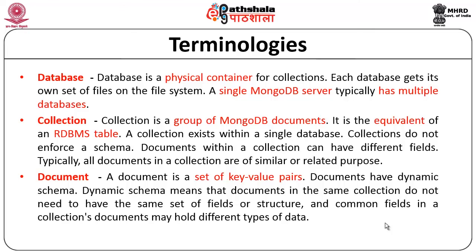A document is a set of key-value pairs. Documents have dynamic schema. Dynamic here means it may vary with respect to each and every document. Document schema means that documents in the same collection do not have the same set of fields or structures. A few documents may have common fields in a collection, but even those common fields may have different types of data — that is the meaning of dynamism with respect to documents.